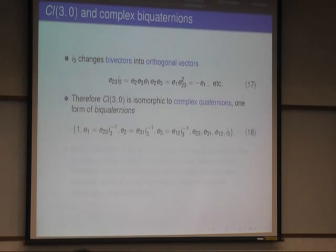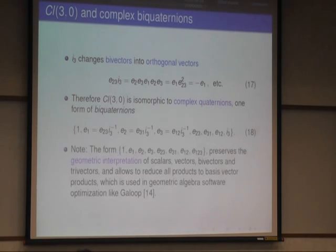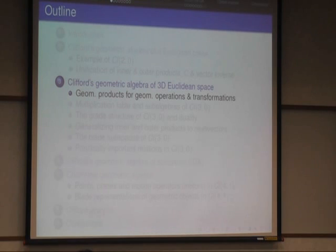That's called one expression, one kind of quaternions. And so the whole algebra basis of this Clifford algebra of three-dimensional euclidean space can be written in terms of these complex quaternions, bi-quaternions, that can help you to understand a lot of literature. But this form which I previously introduced first gives you this geometric interpretation of scalars, vectors, bi-vectors, and tri-vectors. And also helps in software optimization in making software fast.